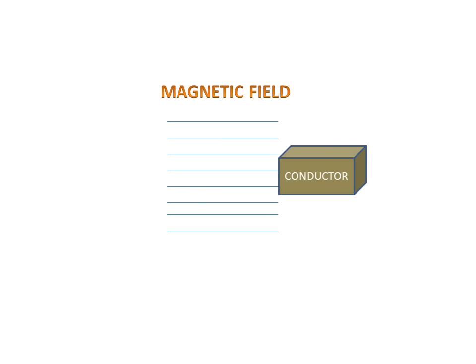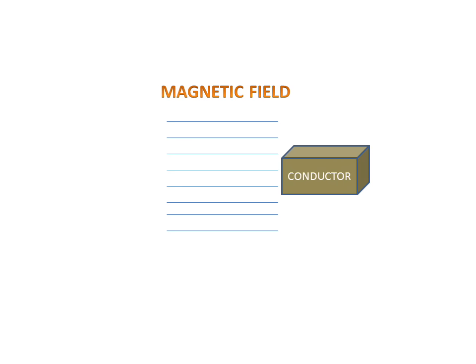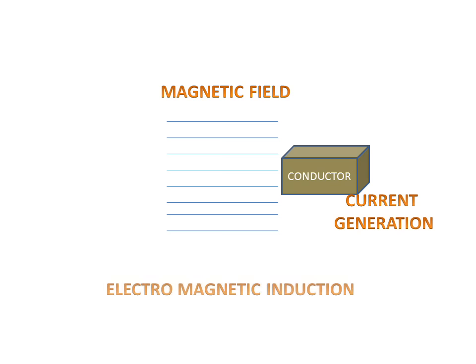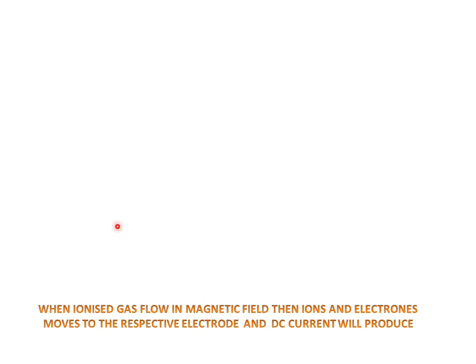When this conductor moves through the magnetic field, current will be generated. On this law, our MHD will work. Now we will see the MHD Principle: Electromagnetic Induction. When ionized gas flows in a magnetic field, ions and electrons move to their respective electrodes and DC current is produced.